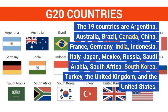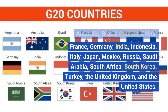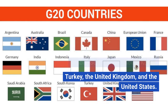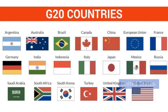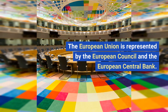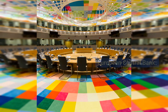The 19 countries are Argentina, Australia, Brazil, Canada, China, France, Germany, India, Indonesia, Italy, Japan, Mexico, Russia, Saudi Arabia, South Africa, South Korea, Turkey, the United Kingdom, and the United States. The European Union is represented by the European Council and the European Central Bank.